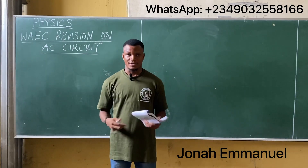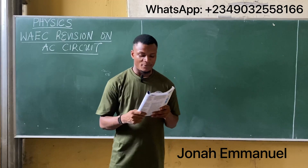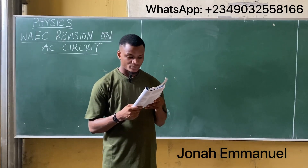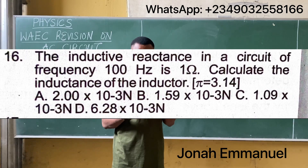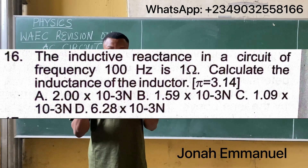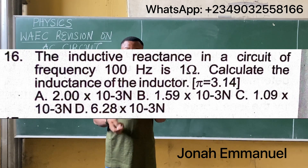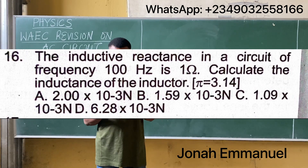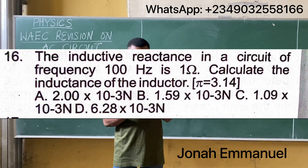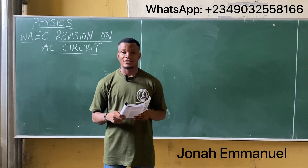This is from a past question. It says: the inductive reactance of a circuit of frequency 100 hertz is one ohm. Calculate the inductance of the inductor. Take pi to be equal to 3.14. So you have your values there — let's get this done.